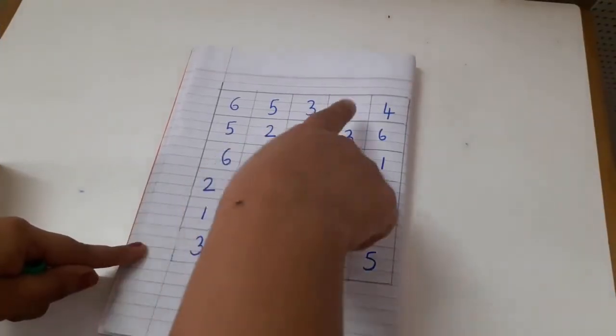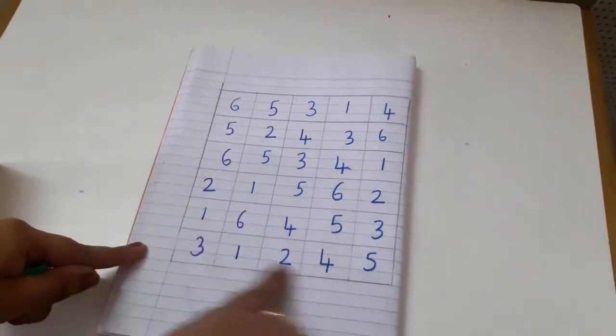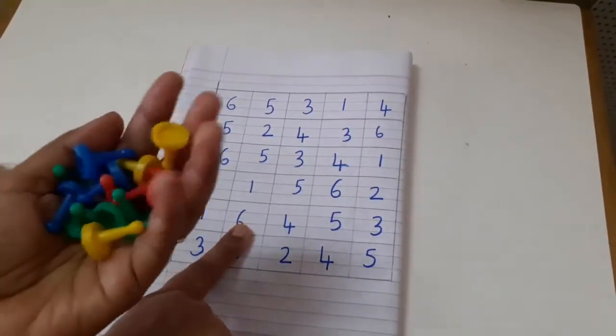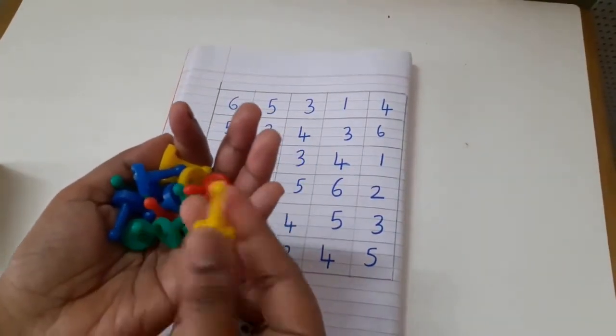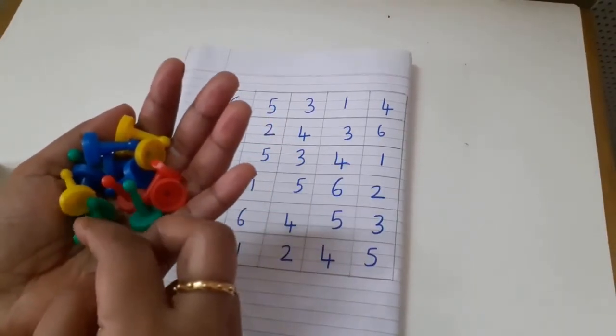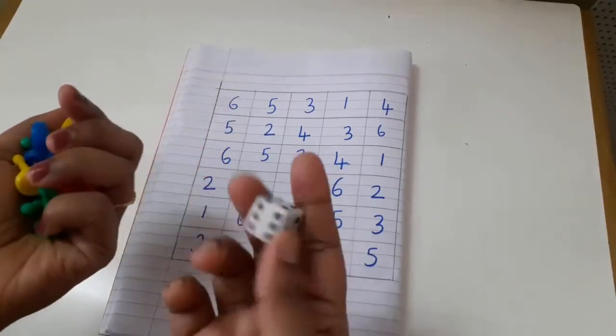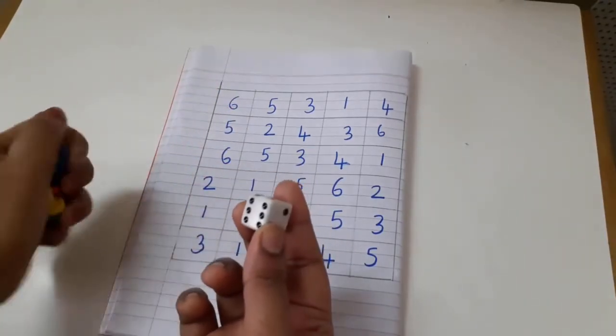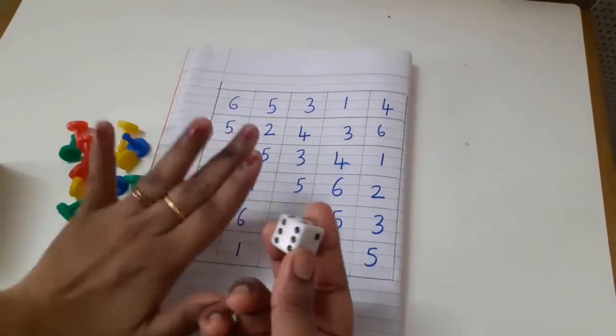In this next game, what I have done is I have written numbers from 1 to 6 all over the place randomly. I have taken these coins - you can take any game coins you have at home - and obviously a dice is needed for this one.